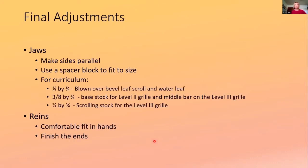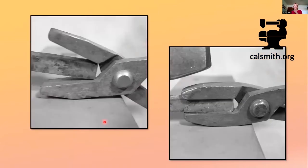Now we're off to make the final adjustments. If you are going to follow along with the curriculum, you're going to want tongs that are made to hold this size material. And then when you finish with the reins, they should comfortably fit in your hands. And then we'll talk about finishing off the ends.